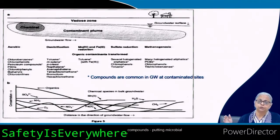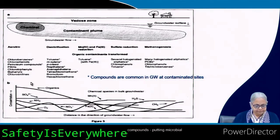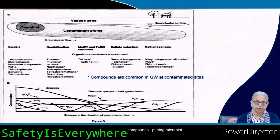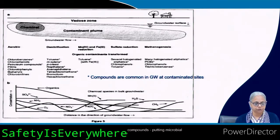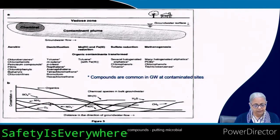Here we are looking at subsurface contamination by different chemicals using the sequence of electron acceptors: oxygen first, then denitrification where nitrate is converted to nitrogen gas, then Mn⁴⁺, then Fe³⁺, then sulfate reduction, and finally methanogenesis. As long as oxygen is available, bacteria will utilize organic compounds along with oxygen. Ammonia present will be converted to nitrite and then nitrate under aerobic conditions.